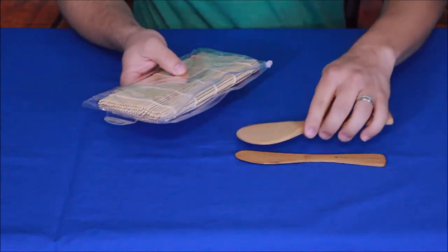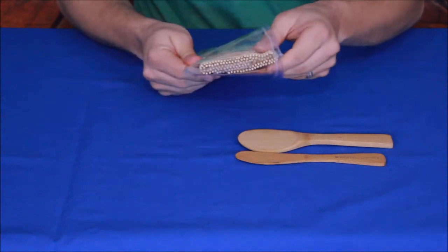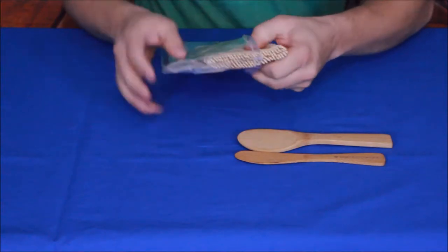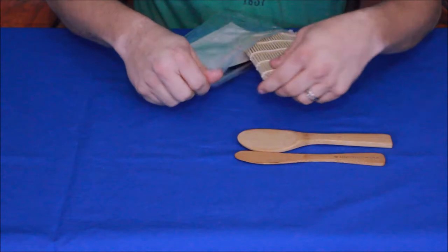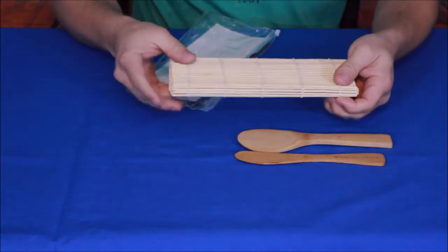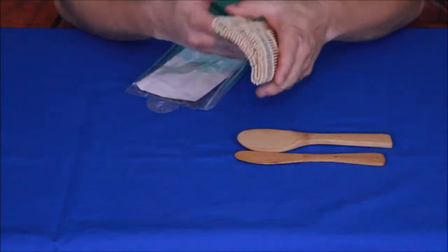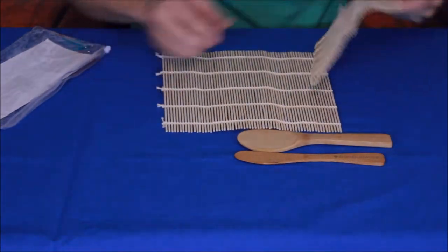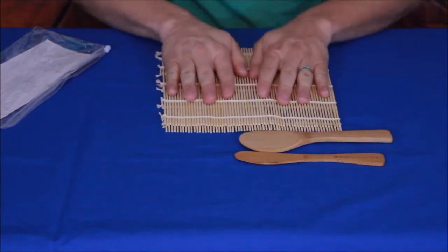Simple flat spoon type there, and then we've got the mats here. Now the mat, it says on the front here, is made from bamboo toothpicks and then this is basically cotton string that they used to tie it off. So here you go.